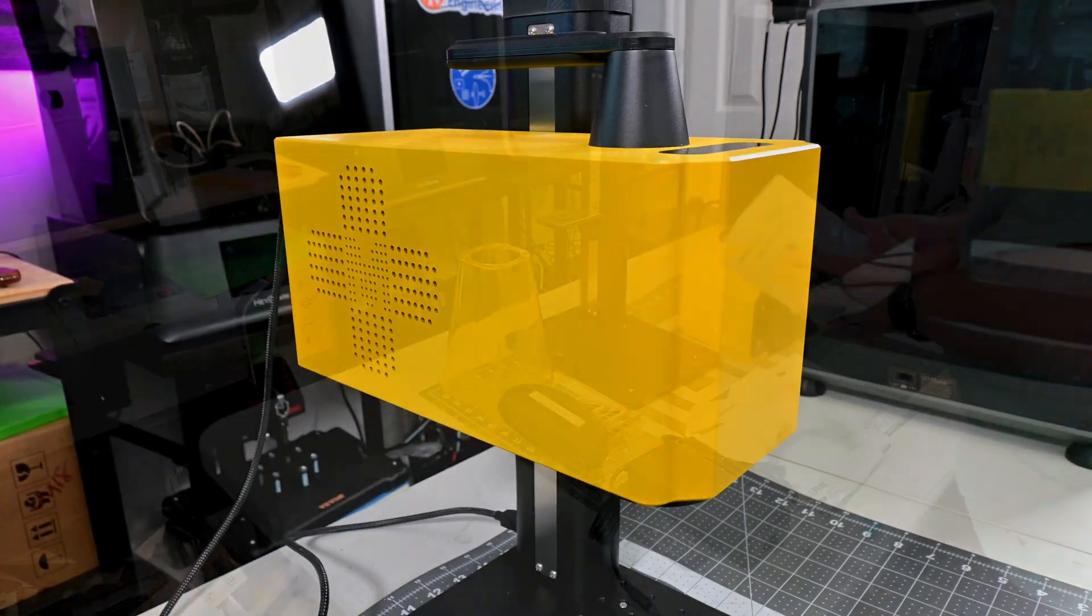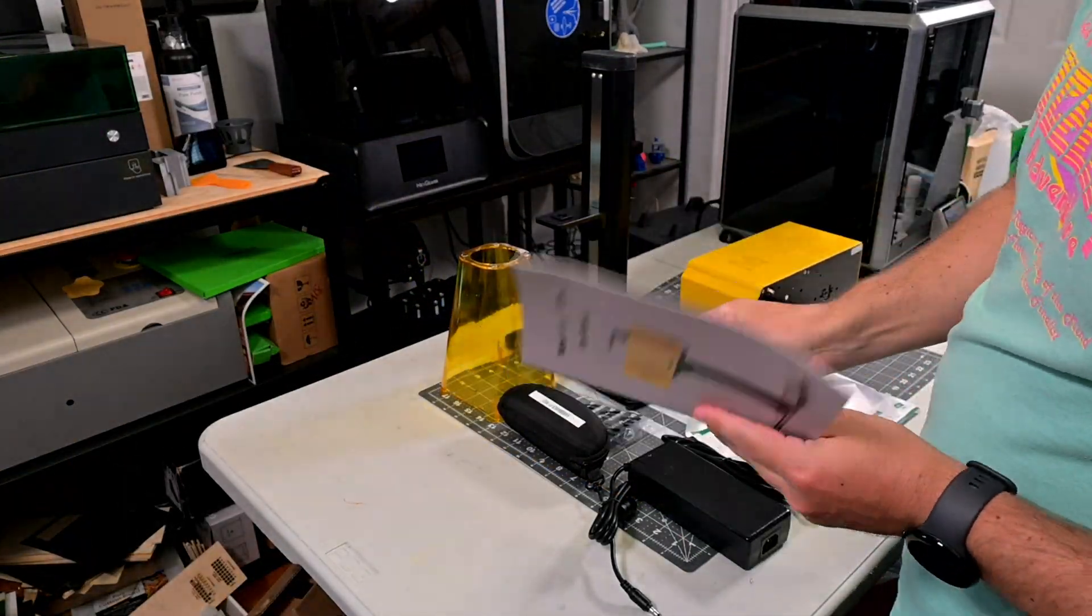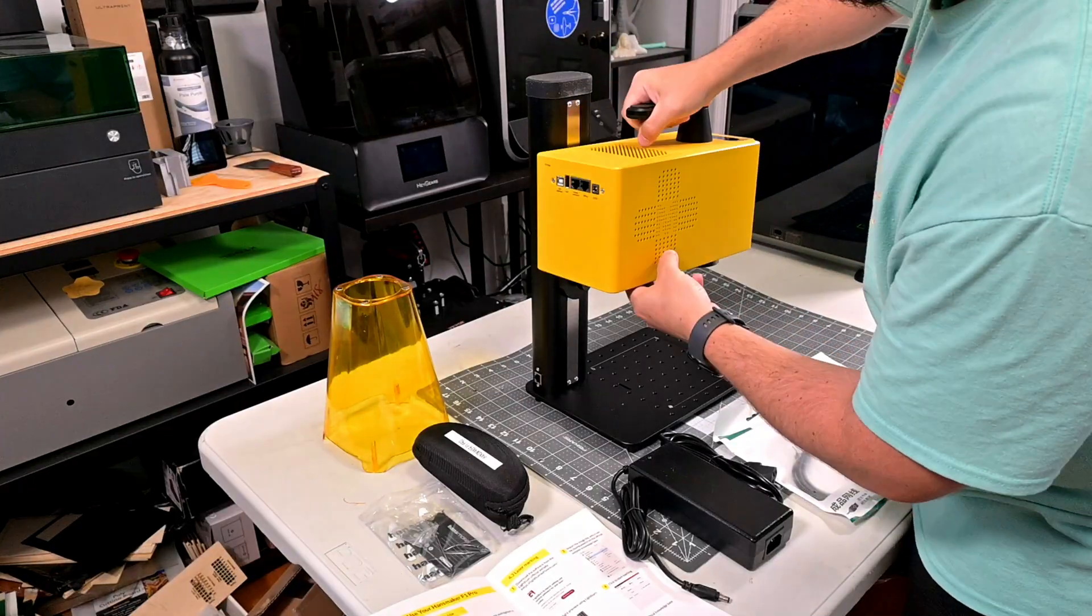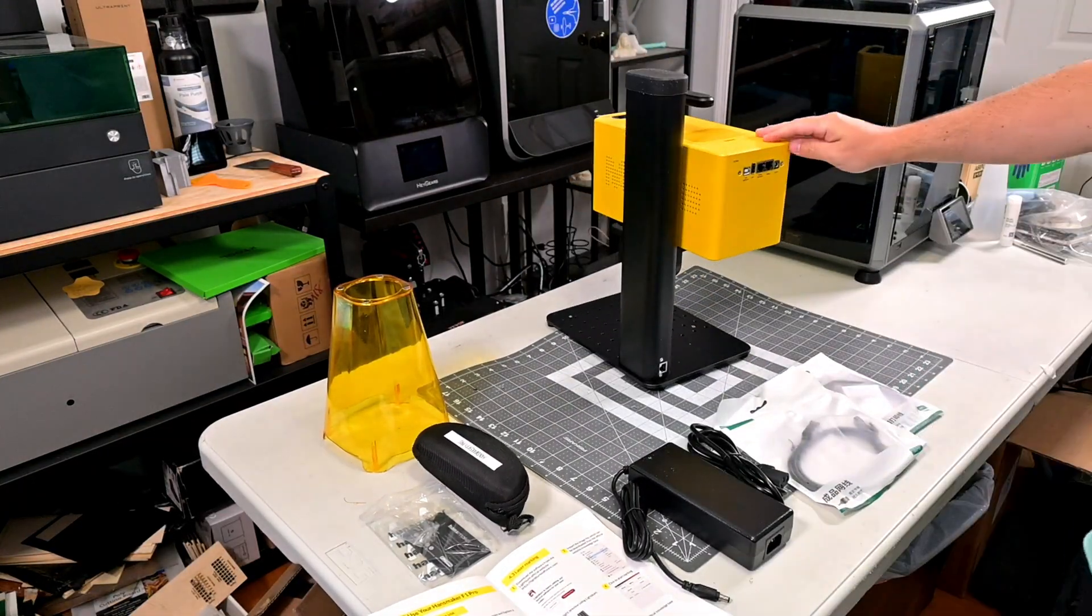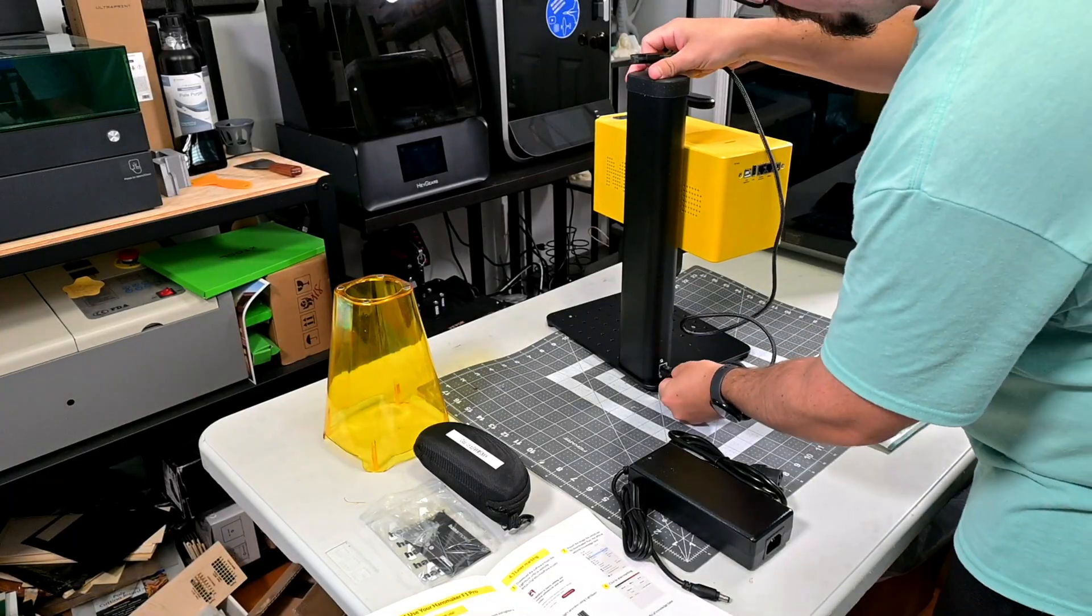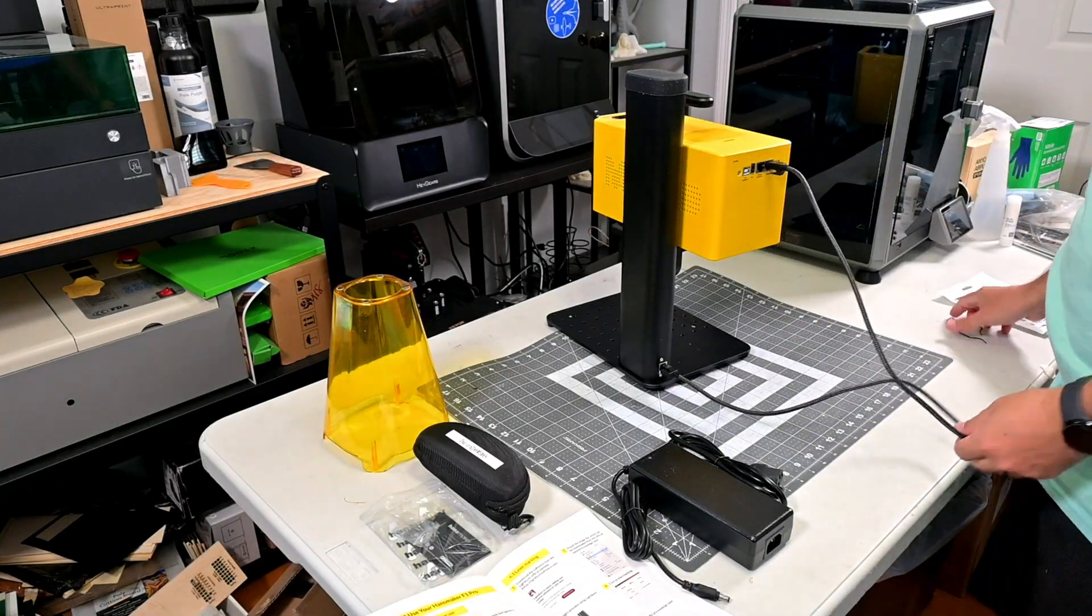Assembling the F1 Pro was very simple. Remove everything from the well-packaged box and simply place the laser onto the lifting stand and secure with a single bolt. And then plug in the lifting stand, plug in the power brick, and you're ready to go. Handsmaker also includes a nice pair of safety glasses.